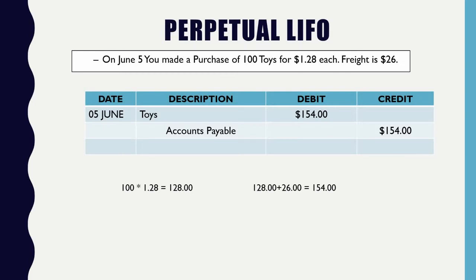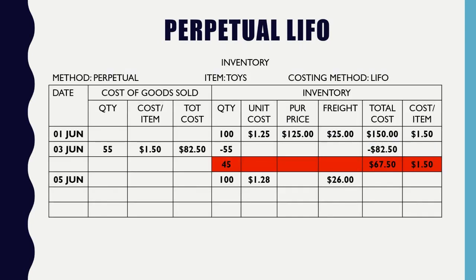Then we make another purchase of 100 units at $1.28 with a freight of $26. I plug it in — 100 units at $1.28, which is $1.28 plus $0.26 giving you $1.54. I need to figure out my cost per item, so $1.54 divided by $1.00 gives you $1.54. Color code it — now I have two batches of inventory.